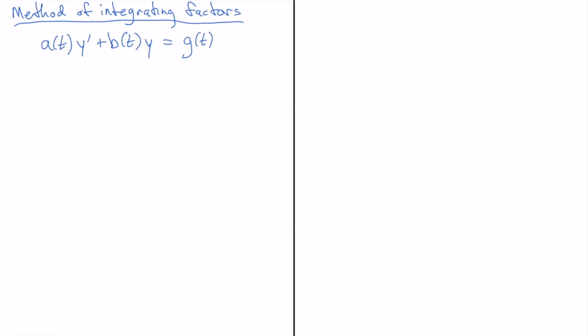So the method of integrating factors can be used for equations of the form that I've got here where I have some function a of t multiplying the y prime and a b of t multiplying the y term and on the right hand side I have the sum of those equal to g of t, an inhomogeneous term.